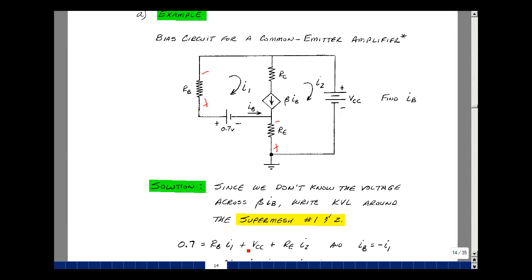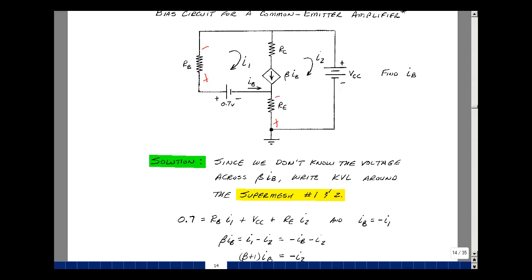So I have an equation with I1, I2. I'm going to solve for the current I sub b. So what is I sub b? Well, it's equal to the controlling variable for this controlled source, but it's equal to the negative of I1. So I have this equation then in terms of I sub b and then another unknown, I2. We need another constraint.